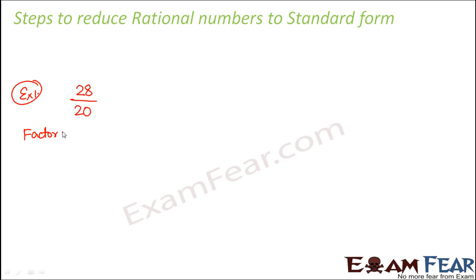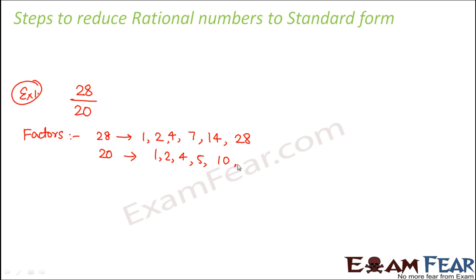The factors of 28 are 1, 2, 4, 7, 14, and 28. If you have forgotten how to find factors, please refer to the videos on factors and multiples. The factors of 20 are 1, 2, 4, 5, 10, and 20. The common factors are 1 and 4. Since there is a common factor other than 1, the number is not yet in standard form and can be further reduced.